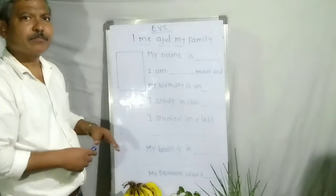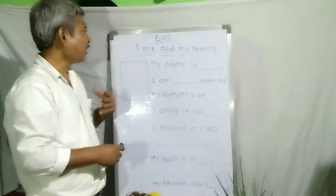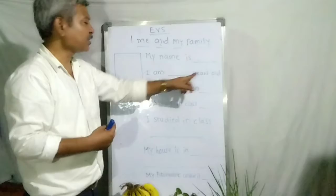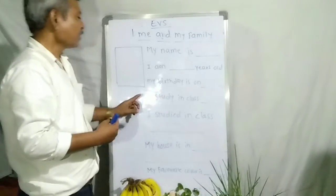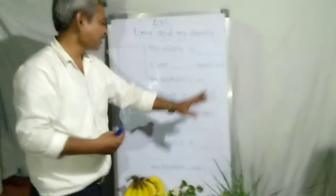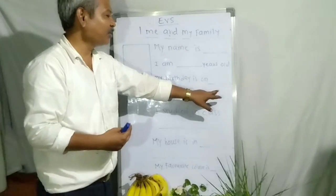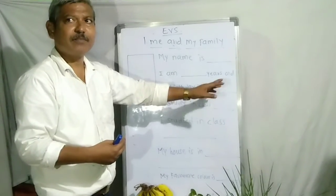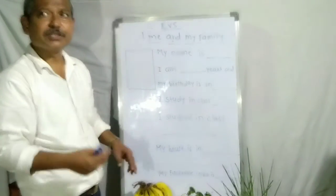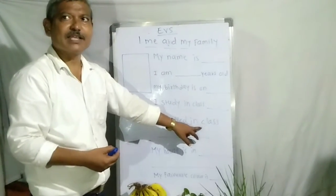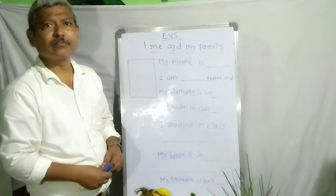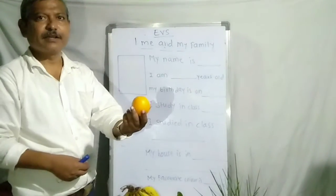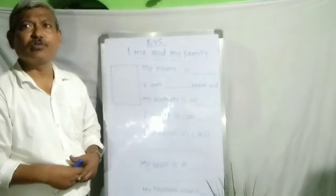So on the first day, let me tell you about myself as an introduction. My name is Ramdas Raut. I am 44 years old. My birthday is 18th May 1975. I teach you from first to fifth class science. My house is near the Vithal Mandir temple in Manwar. My favorite color is orange. This is information about me.